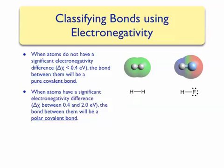We can represent the asymmetry in the charge of the molecule by using partial charges. Partial charges are represented by a lowercase delta. A delta-plus next to an atom signifies that the atom will have a partially positive charge when in a covalent bond, while a delta-minus indicates a partial negative charge. We call these partial charges because in a covalent bonding situation, electrons are not fully transferred to form ions.